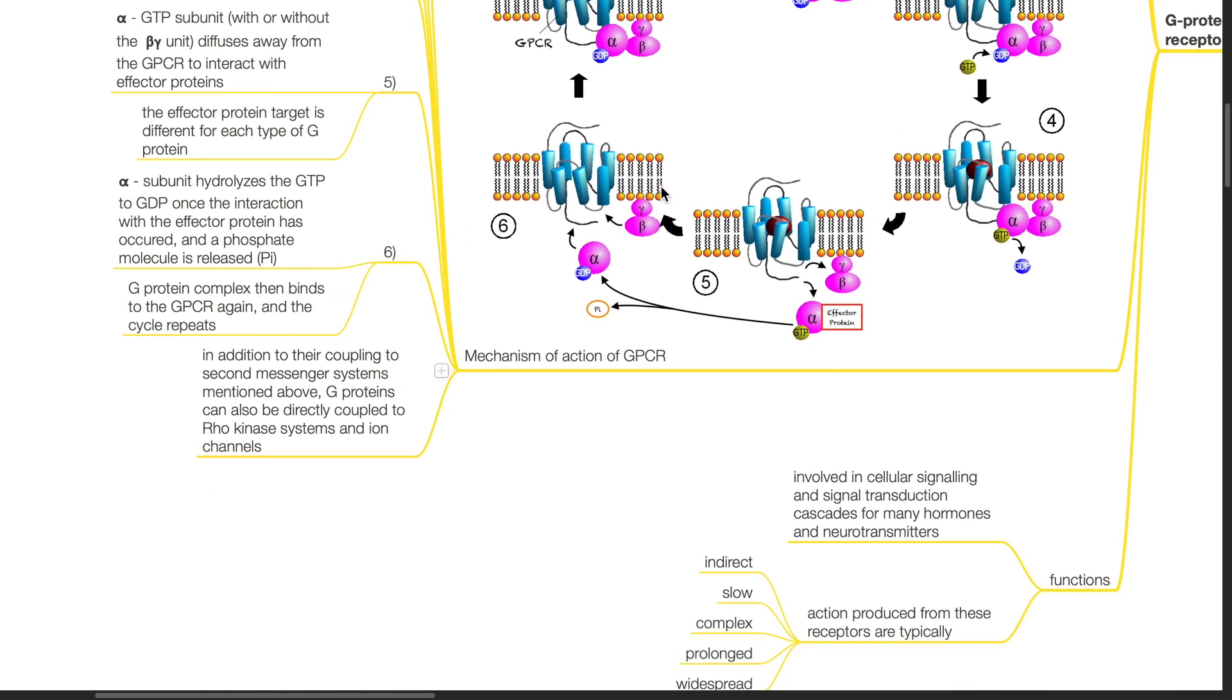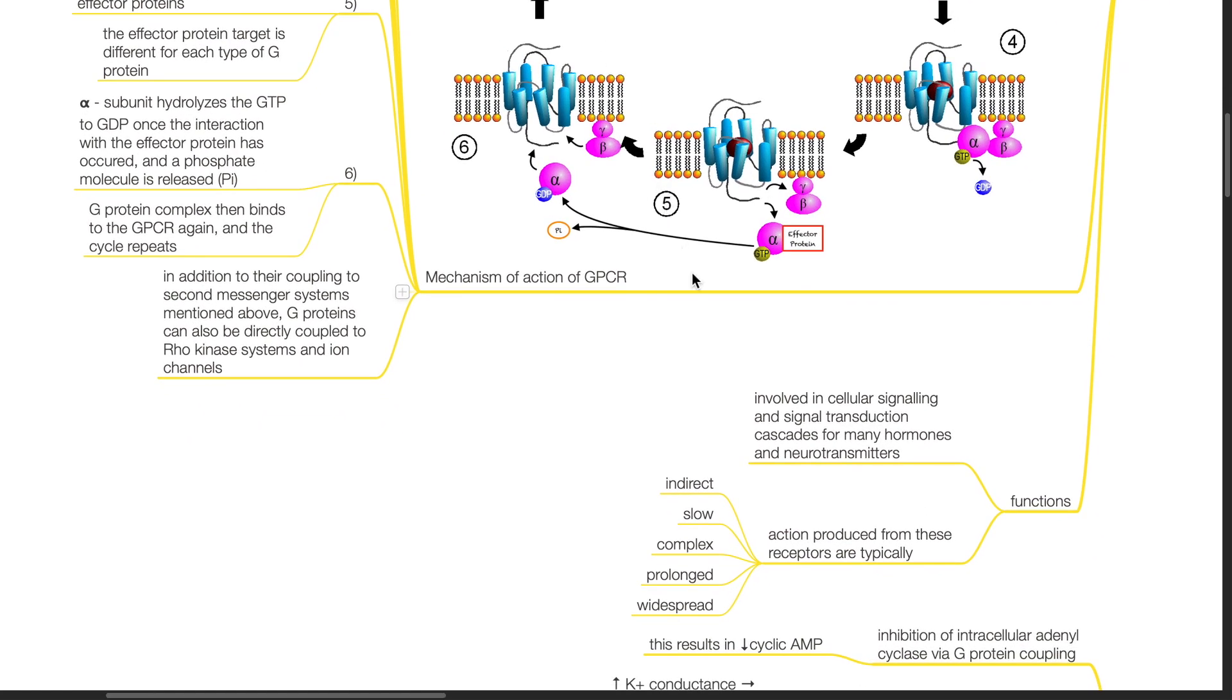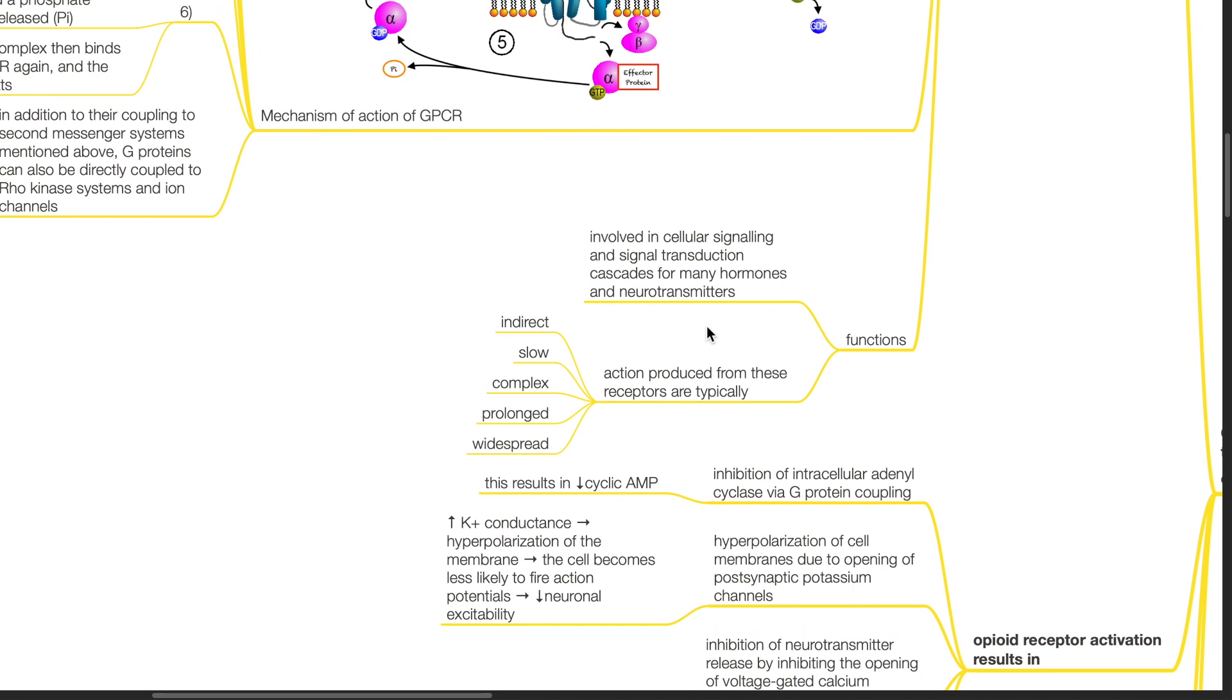In addition to their coupling to second messenger systems mentioned above, G-proteins can also be directly coupled to Rho kinase systems and ion channels. G-protein coupled receptors are involved in cellular signaling and signal transduction cascades for many hormones and neurotransmitters. Actions produced from these receptors are typically indirect, slow, complex, prolonged, and widespread.